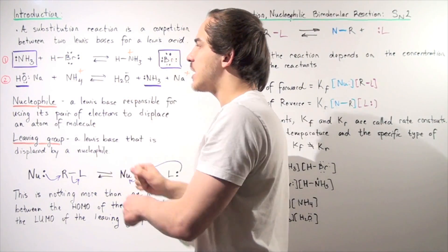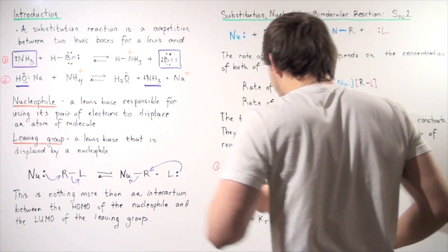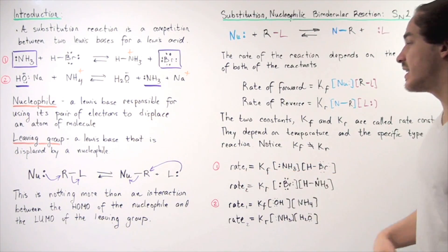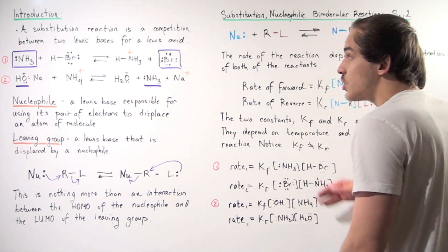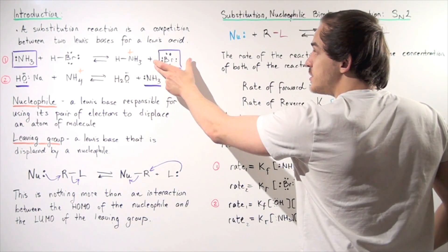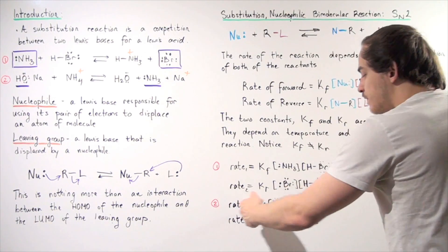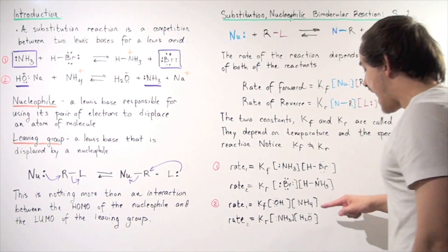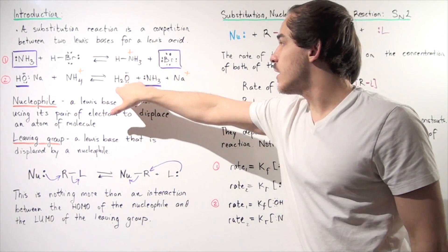So let's take our two substitution reactions and write the rate law for both the forward and reverse reactions. For reaction one, the rate of forward is equal to K-forward multiplied by the concentration of our Lewis base (the nucleophile) and our Lewis acid. The rate of reverse equals K-reverse multiplied by the concentration of the Lewis base times the concentration of the Lewis acid on the product side. For reaction two, the same story: rate of forward equals K-forward times the concentration of our base times the concentration of our acid, and going in reverse, K-reverse multiplied by the concentration of the two products.